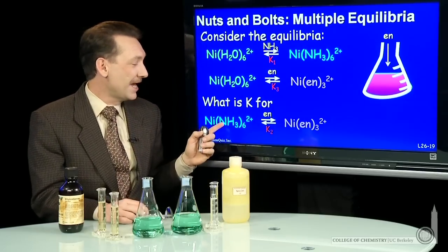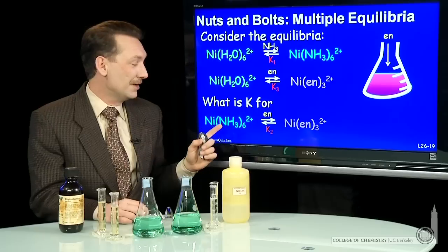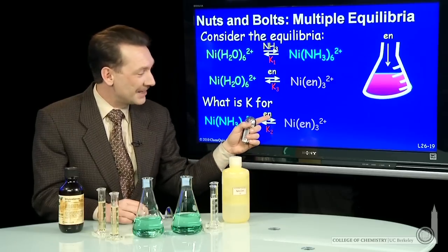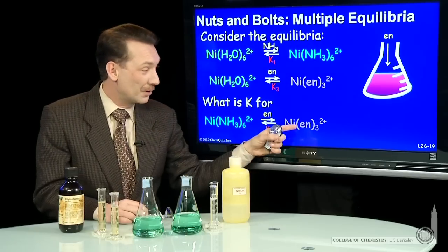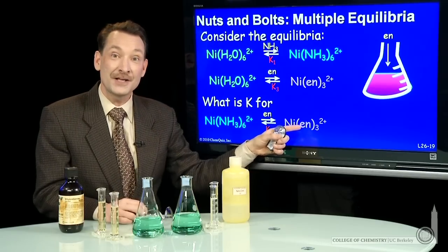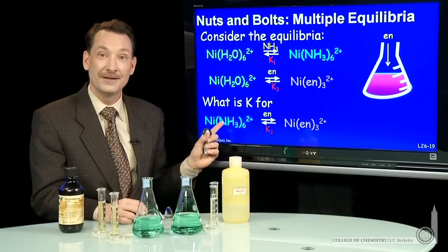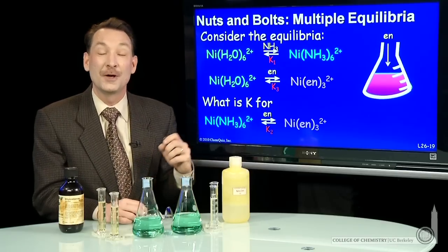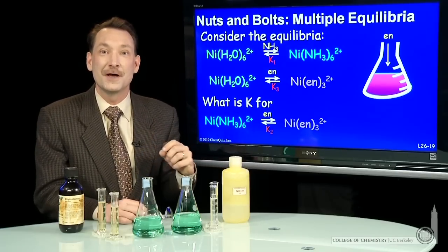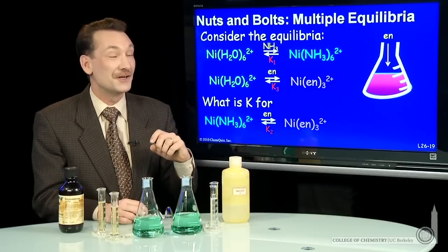The question is, what if I have the blue ammonia complex and add ethylenediamine? Will I get the ethylenediamine complex, or will equilibrium favor the ammonia complex? Let's look at these equilibrium constants more carefully to make a determination.